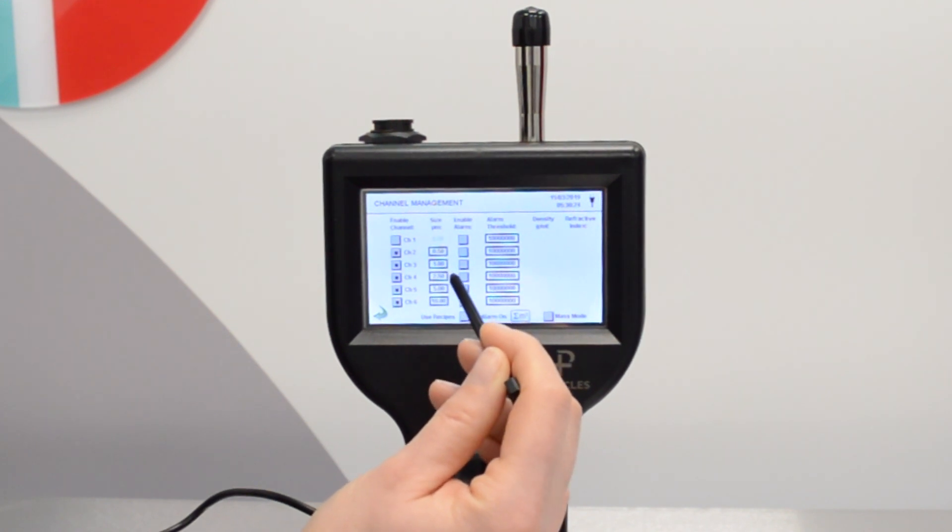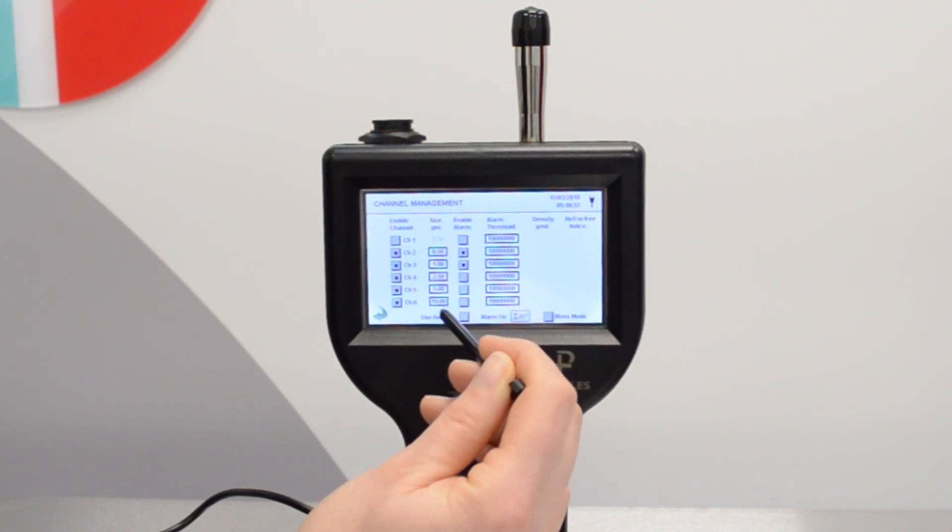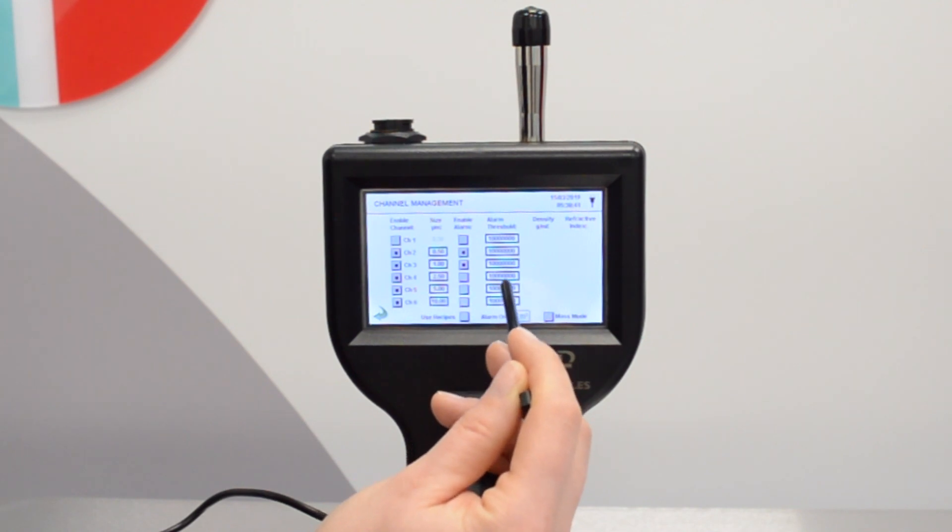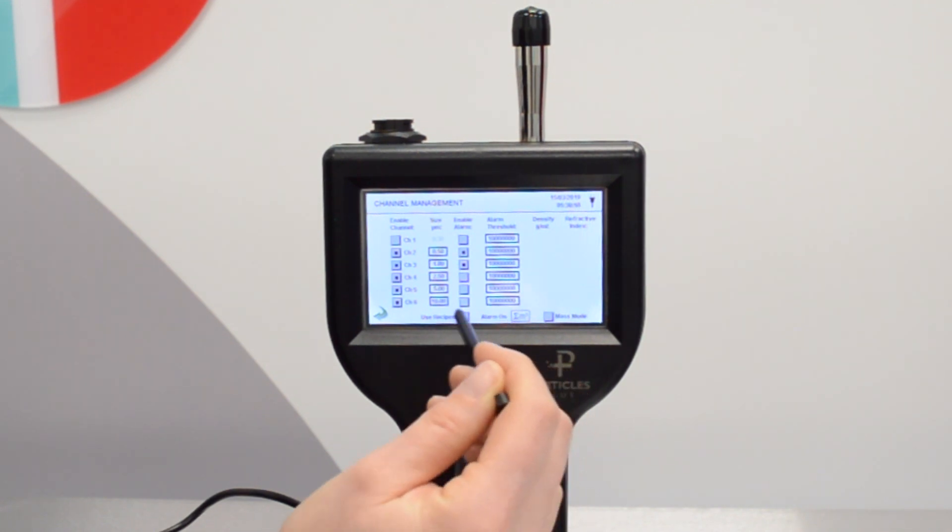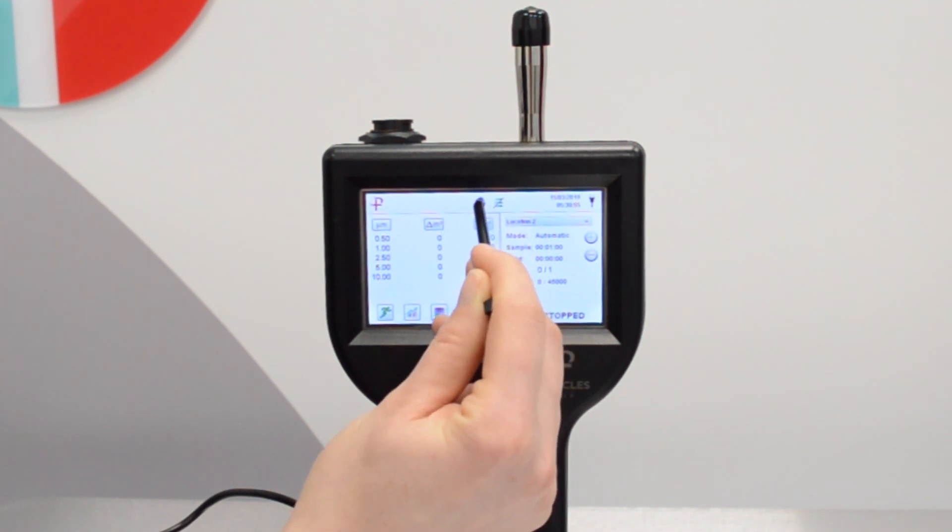In the enable alarm column you can select if you would like the unit to trigger an alarm if counts are hitting a threshold which you can set in the threshold column. This is great for continuous monitoring. There is a visible and audible alarm. The count numbers on the home screen will turn red and also the audible alarm will sound. You can select the unit which the threshold is set at so we would select cumulative cubic meter to be in line with the ISO standard. Back to the home screen and this is where you can change the volume.